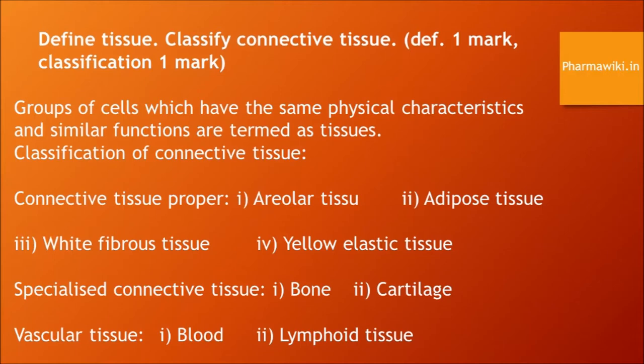What are true ribs and false ribs? There are 12 pairs of ribs. The anterior first seven pairs of ribs are attached to the sternum via costal cartilage and these are known as true ribs. The next three ribs are attached indirectly via the seventh rib, which are known as false ribs.